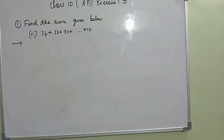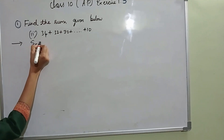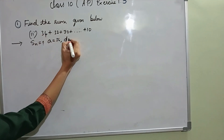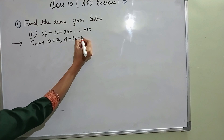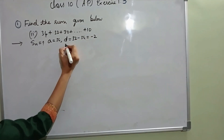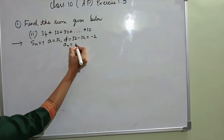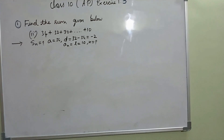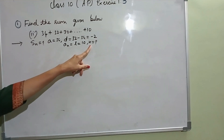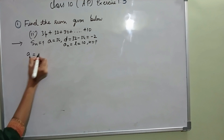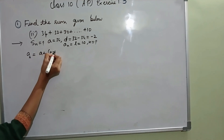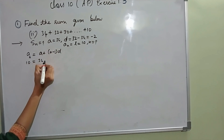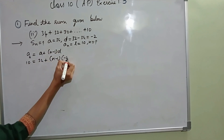Find the sum given below. We need to find SN. A is 34. D is second term minus first term: 32 minus 34 gives minus 2. The last term AN is given as L equal to 10. N I don't know. Before finding SN, I need to find N using the nth term formula: AN equal to A plus N minus 1 into D. AN is 10, A is 34, D is minus 2.